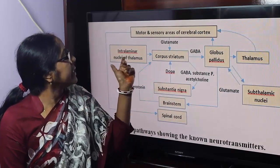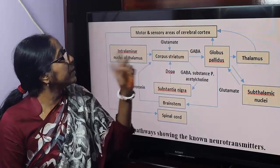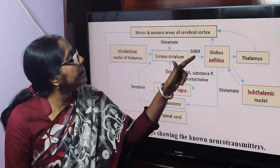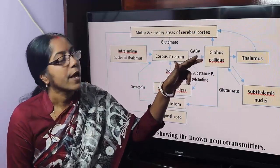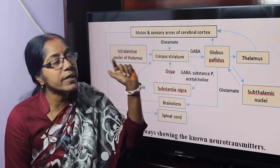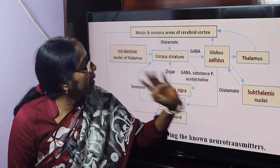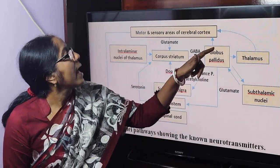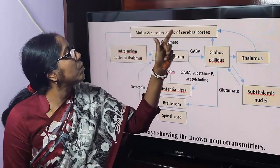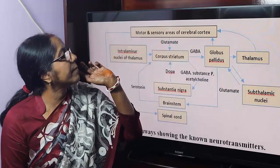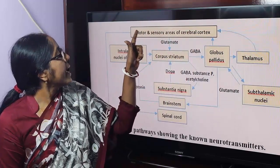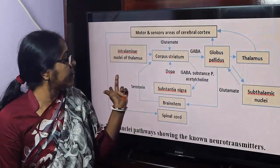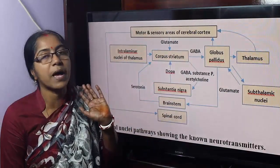Input also comes from the brainstem and thalamus to the neostriatum. From the neostriatum, information goes to the globus pallidus. What is the output of the globus pallidus? It projects to the subthalamic nucleus, brainstem, thalamus, and cerebral cortex — that is, the motor and sensory areas. This information ultimately reaches the spinal cord from the cerebral cortex.